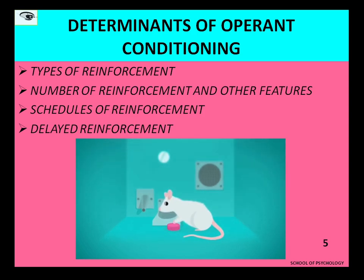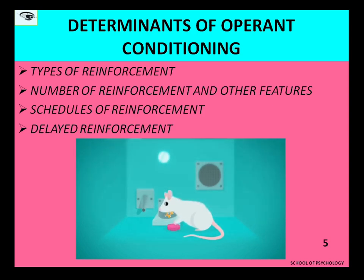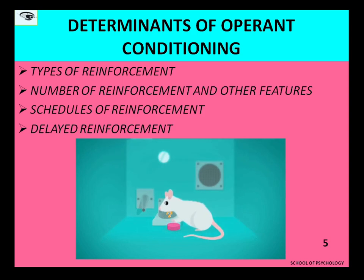Moving to the next feature — number of reinforcements and other features. There are three important features: number of trials, amount of reinforcement, and quality of reinforcement. If all three are increased, the process of operant conditioning will be accelerated.